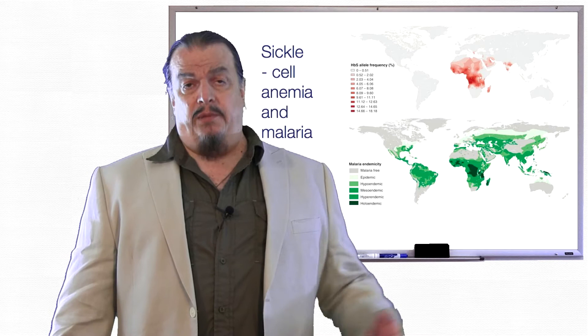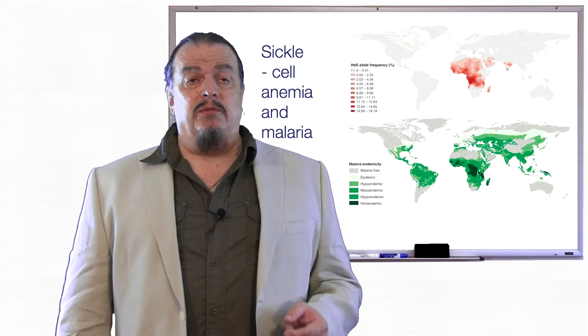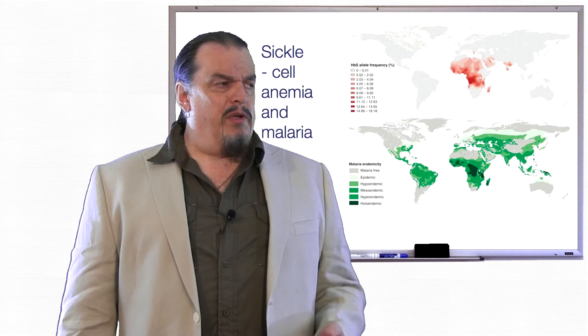The sickle cell mutation has a hidden benefit. Having just one copy of the mutated gene helps the carrier to better tolerate the effects of malaria. Malaria kills 429,000 people every year in tropical countries.